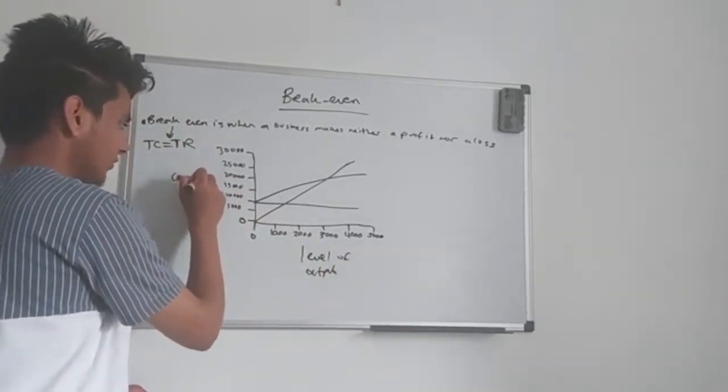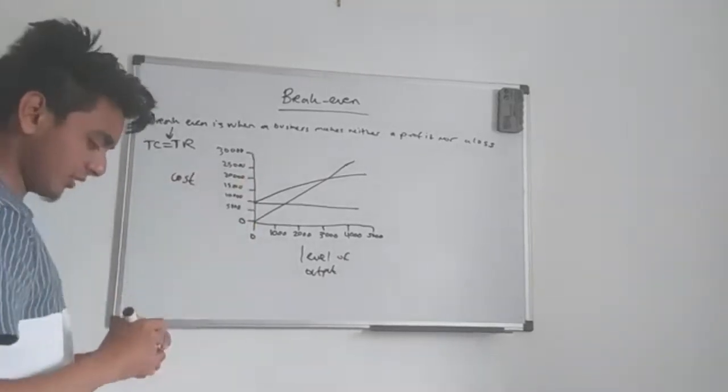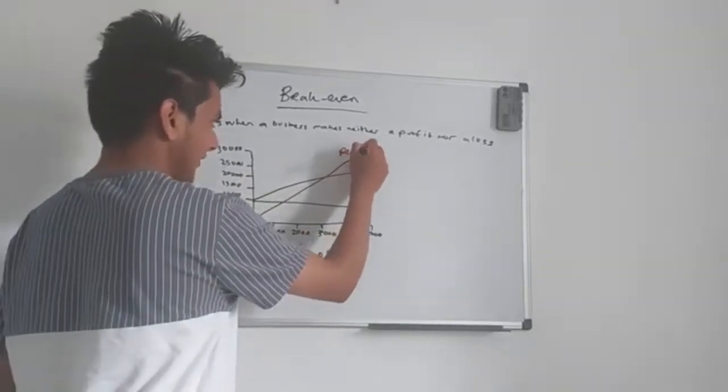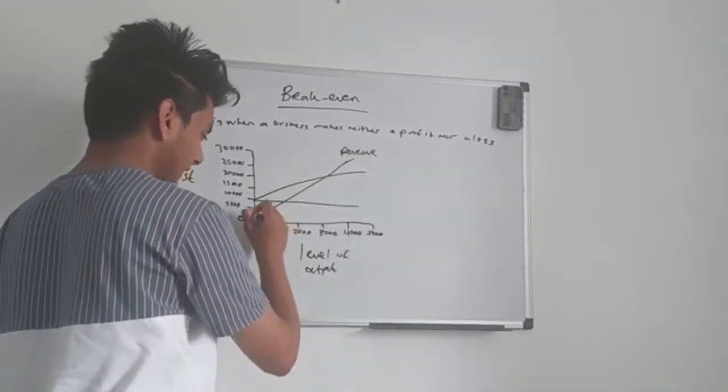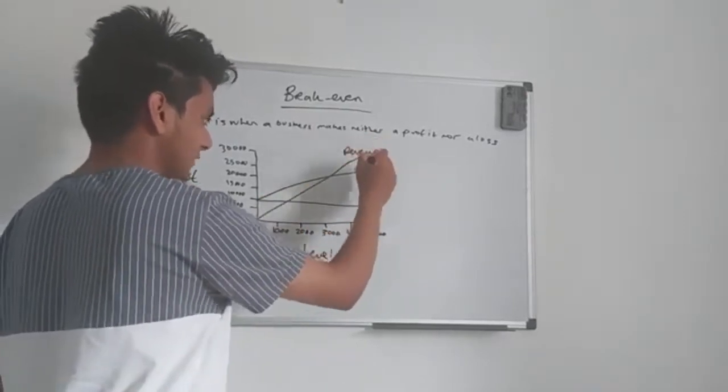For those of you guys who are new here, this is the break even graph. So if you don't know what these lines mean, this is the revenue line. So from zero all the way up is how much revenue the business makes.